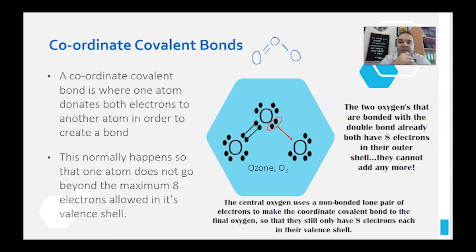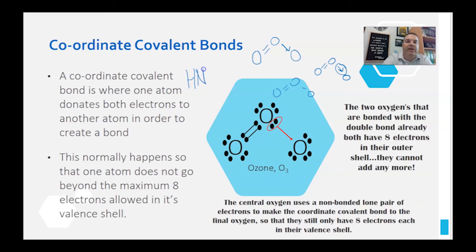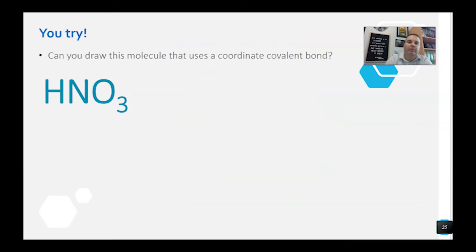In some older textbooks coordinate covalent bonds were shown with a little arrow. Whether you see it drawn with an arrow or without, it means the same thing — you don't have to include the arrow anymore for a coordinate covalent bond. A great one to practice is nitric acid, HNO3, because nitrogen is in period two and can only have a maximum of eight electrons — so you'll need a coordinate covalent bond there. Try drawing it before I show you.